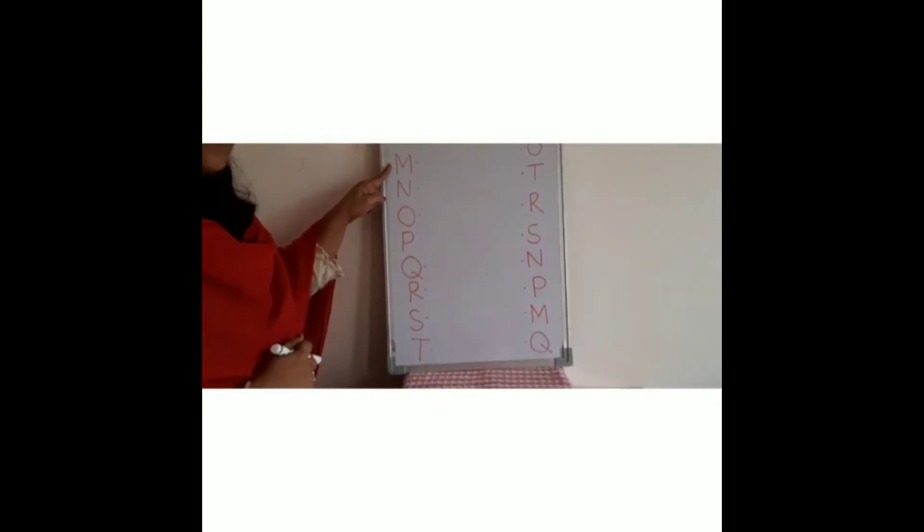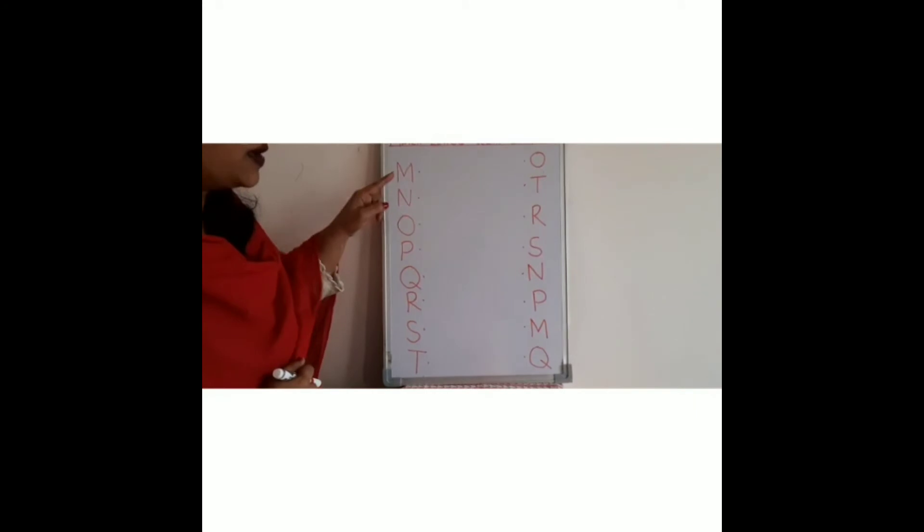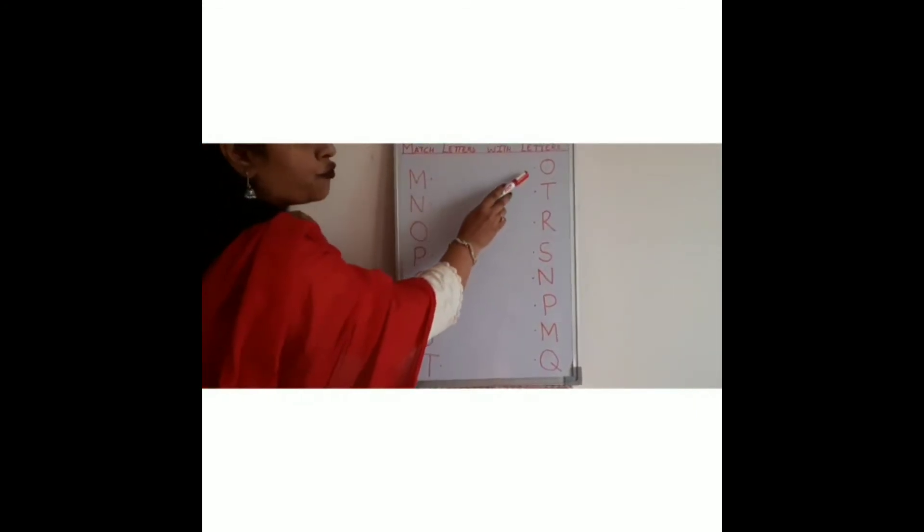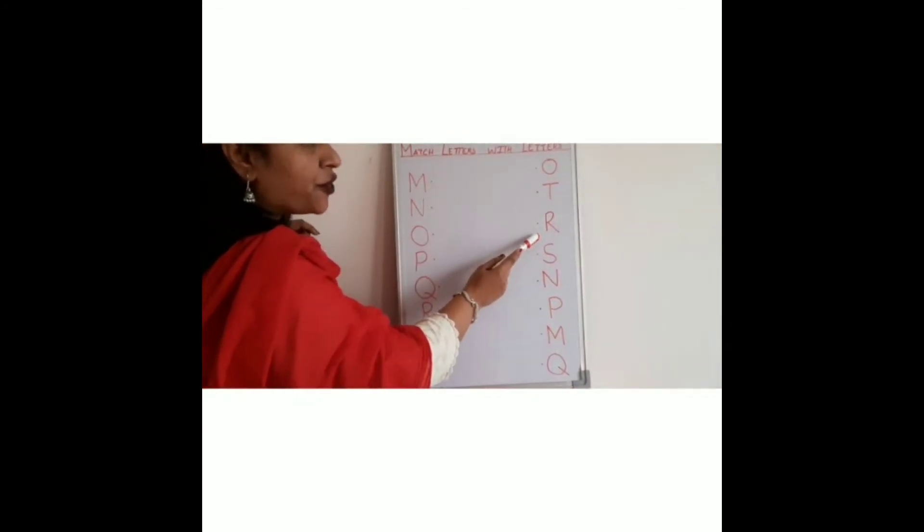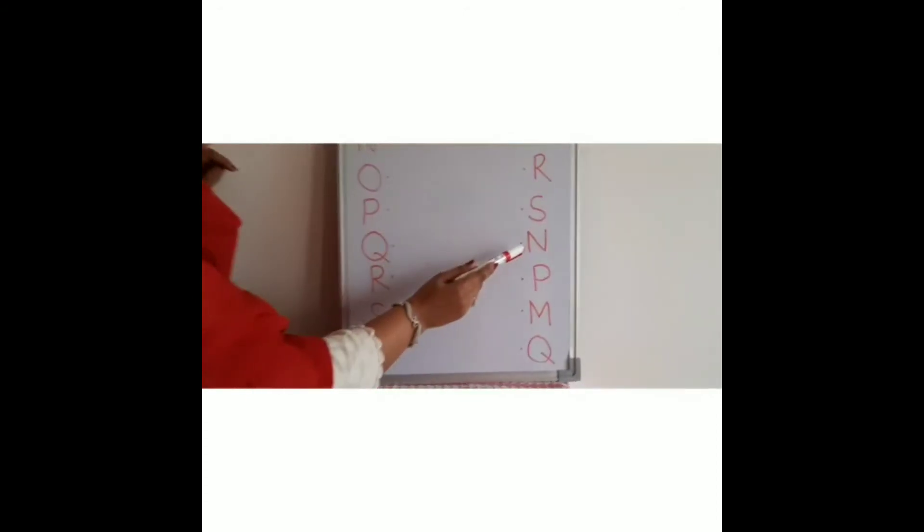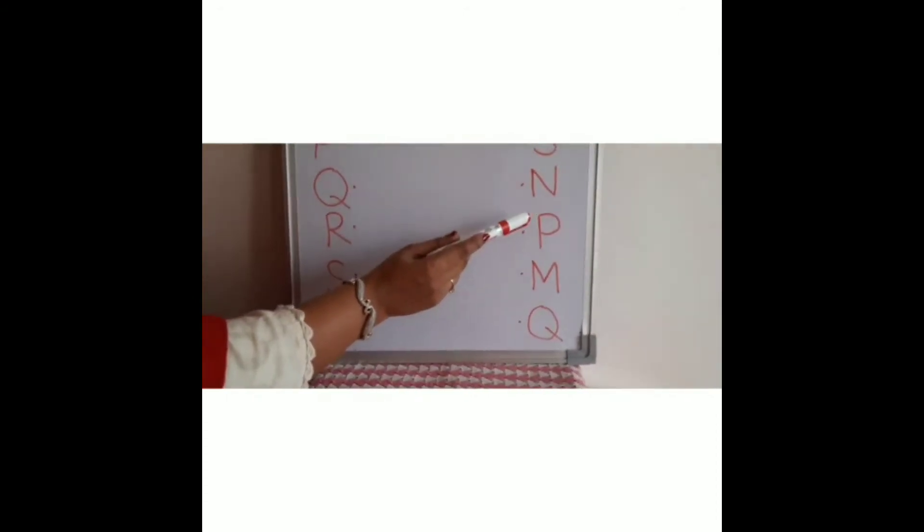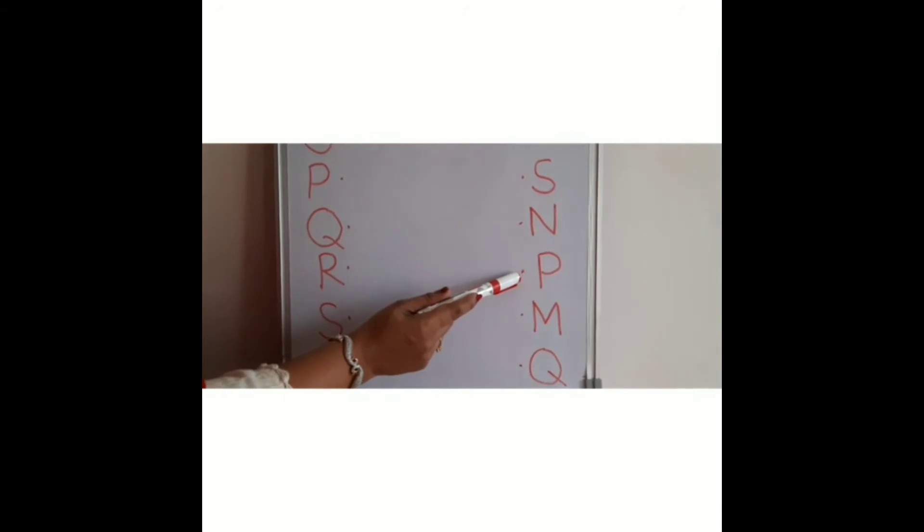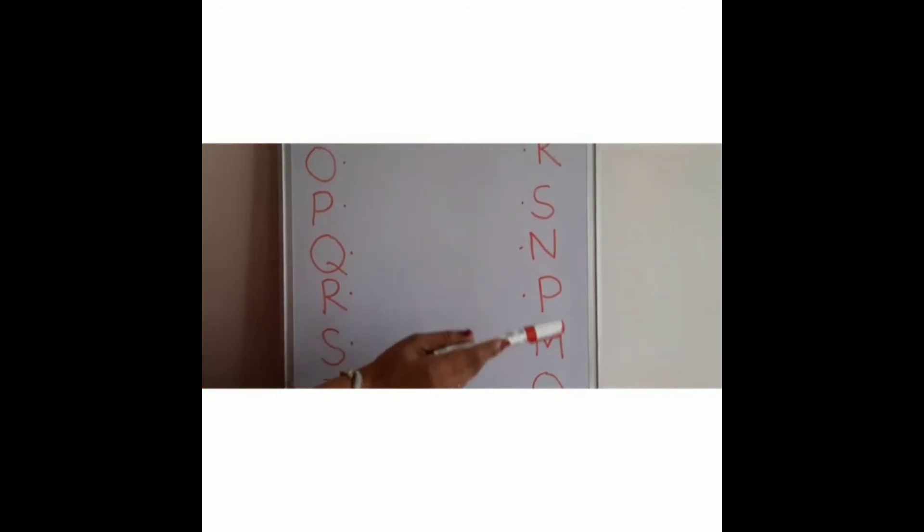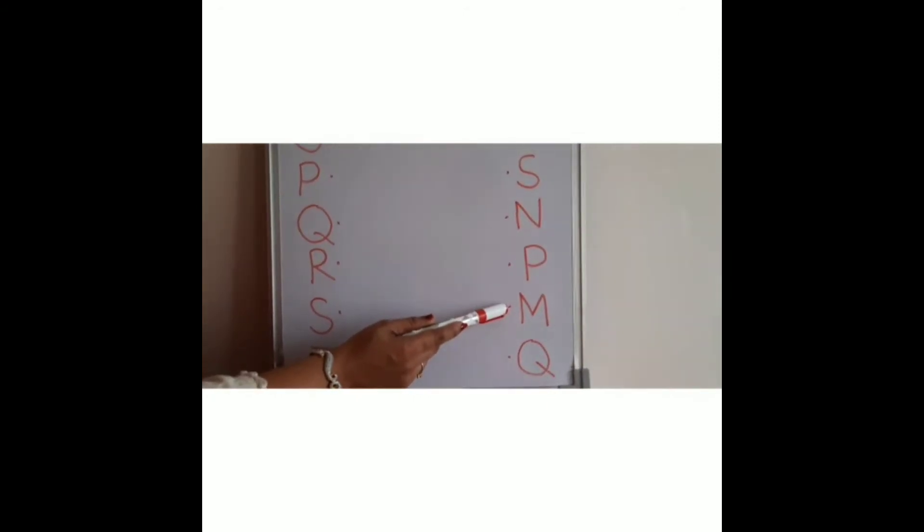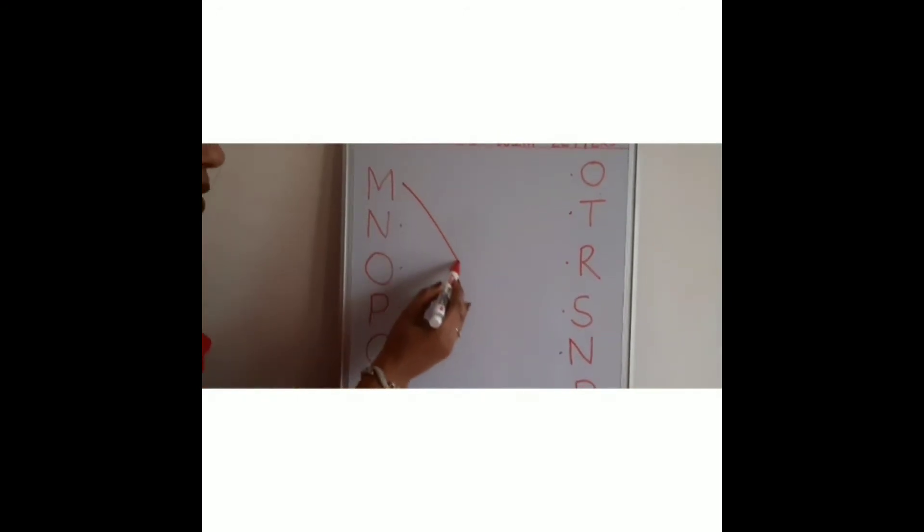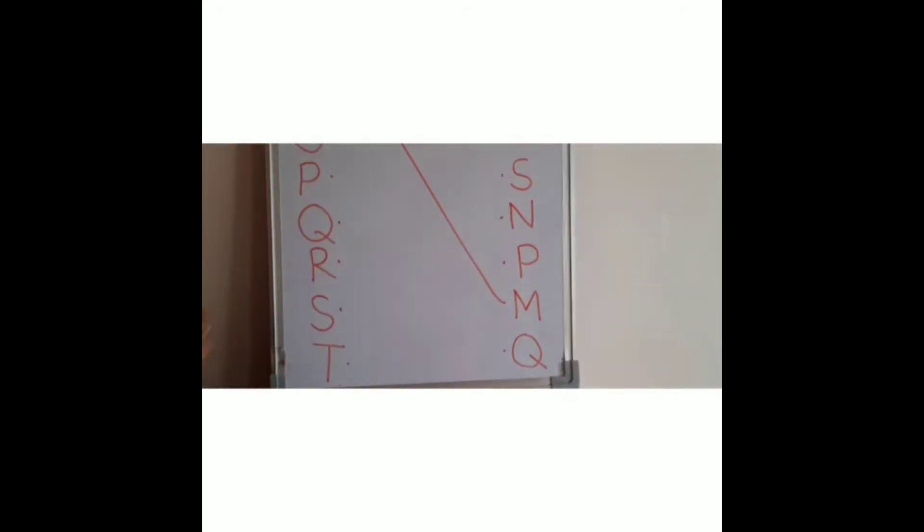From M for mango. And now see, O for owl, T for tiger, R for rhino, S for sun, N for net, P for penguin, M for mango. Yes. So M for mango, we will match M for mango to mango.